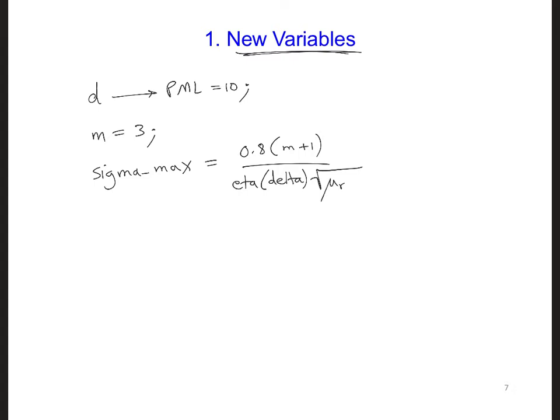Multiplied by square root of mu r epsilon r. Remember, mu r and epsilon r are just equal to 1 in our case, since we have free space adjacent to the absorbing layer. And for lossless materials, eta naught is equal to square root of mu naught over epsilon naught. And I think that's about it for the new variables that we need.